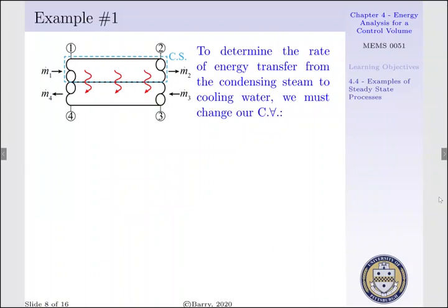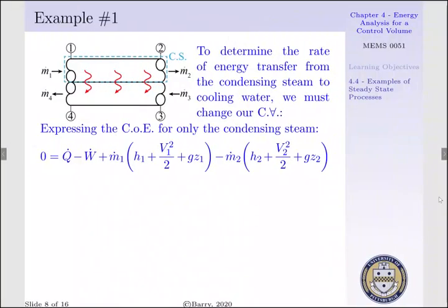To determine the rate of energy transfer from the condensing steam to the cooling water, we change our control surface. We define our control surface only over the first tube carrying the condensing steam, such that heat Q leaves our control volume — that is, heat leaves the condensing steam and is picked up by the cooling water, as shown in the schematic. We then apply our conservation of energy to this modified control volume, with mass flow in and out represented by M.1 and M.2.